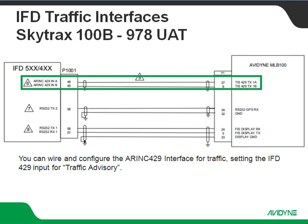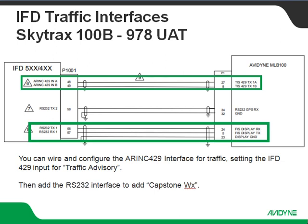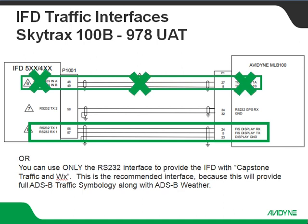So what that means is if you want to use ARINC 429 for traffic, you still have to run these RS-232s for the weather side of things if you want ADSB traffic and weather. The RS-232 interface is going to use one of the Capstone weather protocols — we can do standard Capstone at 38,400 baud, or Capstone high-speed at 115,200 baud.